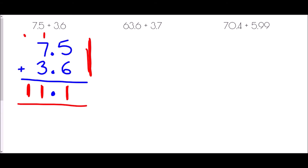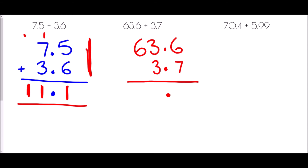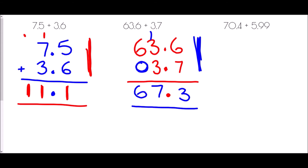For 63.6 plus 3.7: write down 63.6, make sure the decimal point is lined up, and place 3.7 with the 3 and 7 aligned accordingly. Starting from the right: 6 plus 7 is 13, write down 3 and carry 1. Then 1 plus 3 plus 3 is 7. Finally 6 plus 0 is 6. So the answer is 67.3.